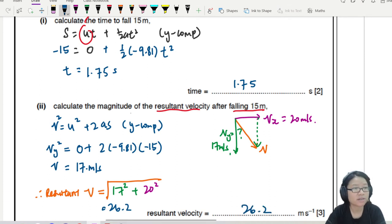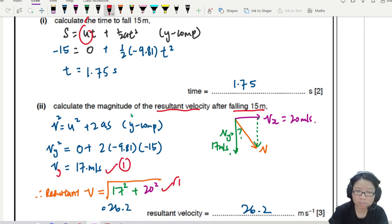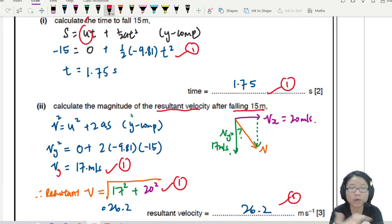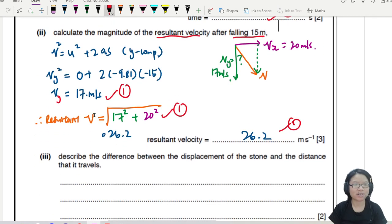So if you find the Y component, VY, you will get one mark. Use Pythagoras to combine with 20, VX, you get one mark. Final answer is one mark. So show substitution is one mark for the first one. Final answer is the other mark. So make sure you show your substitution. You don't want to declare the equation, but it will be very hard for you to troubleshoot your answer. So learn to declare the equation. And sometimes they do give marks for the right equation. Sometimes. Not all the time.